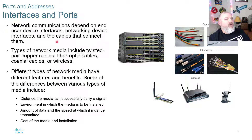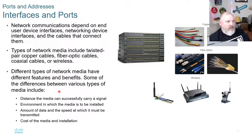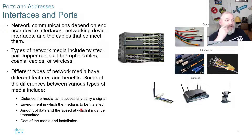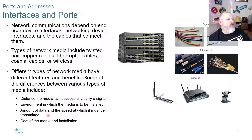Interfaces and ports: network communications depend on end-user device interfaces, networking device interfaces, and the cables that connect them. Types of network media include twisted pair copper cables, fiber optic cables, coax cables, and wireless. Different media have different features: fiber optic can carry signals longer distances than Ethernet copper but is more expensive. Other considerations include the environment — outdoor cabling needs different shielding and must be in conduit — plus fire resistance requirements, cost of media, and installation cost, since fiber optic requires special tools and training.